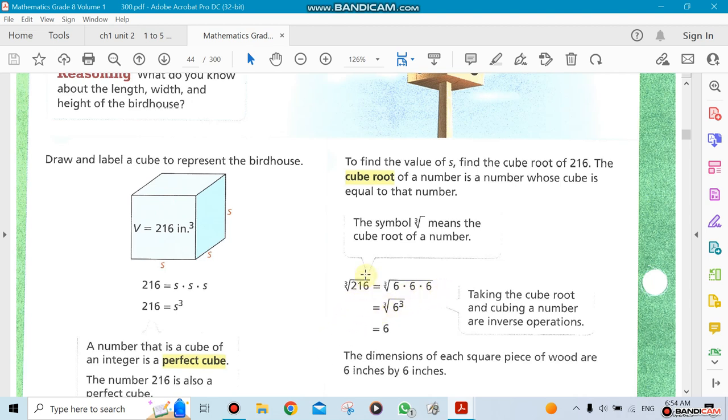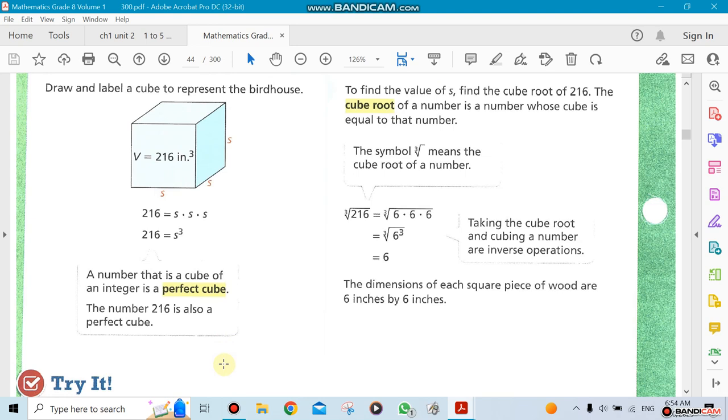The cubic root of 216 - this is how we write the cubic root, with a 3 here to identify that this is a cubic root. The cubic root of 216 is 6. What does that mean? If I take 6 and multiply it by itself 3 times, I'll get 216. So cubic root is the inverse of the exponent.